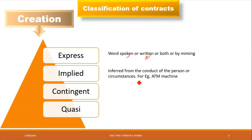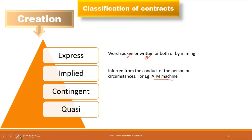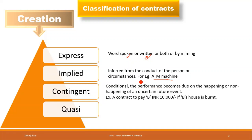Next is implied — implied means inferred from conduct. Yesterday's example was a rickshaw standing at a stand, a bus at a bus depot, and a railway at a railway station — their presence implies they will carry passengers. Similarly, an ATM machine implies you can use it to withdraw or deposit money.